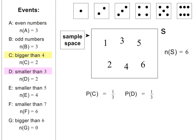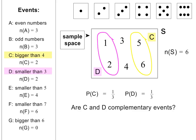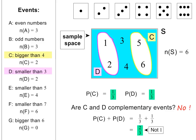Let's now investigate the two events C and D. This is how the two events look in our Venn diagram. Are C and D mutually exclusive events? Yes, because the two events do not overlap — a number cannot be smaller than 3 and bigger than 4. Are C and D complementary events? Looking at the Venn diagram, we see that there are two outcomes that lie outside C and D. This means that C and D are not complementary events. You can also use the fact that the sum of their probabilities is not 1. Please pause the lesson if you need more time here.